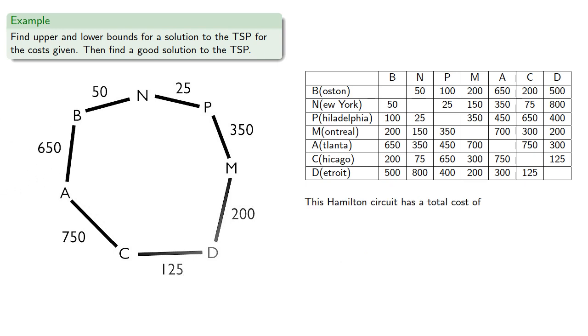So this Hamilton circuit has a total cost of 2150. So can we lower the total cost?